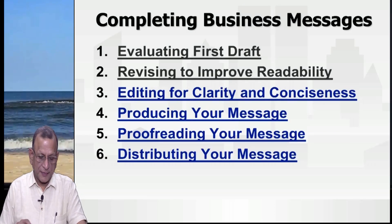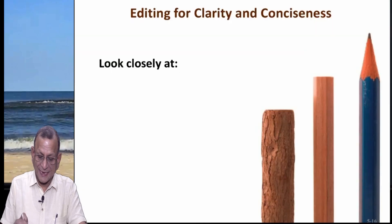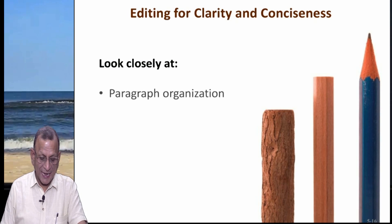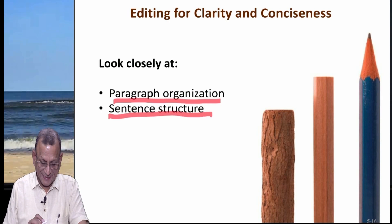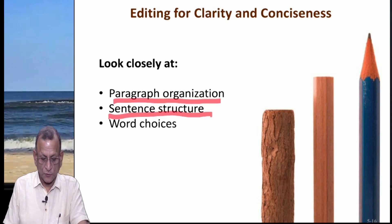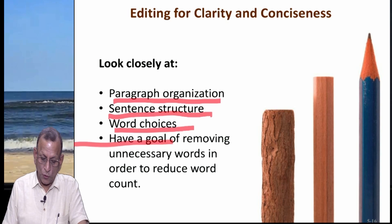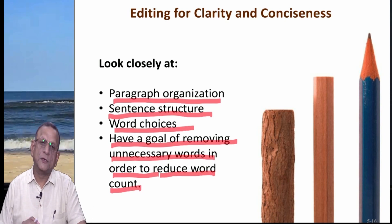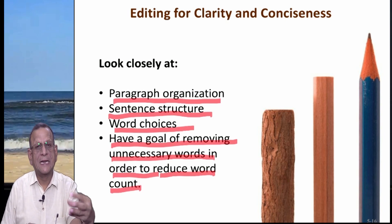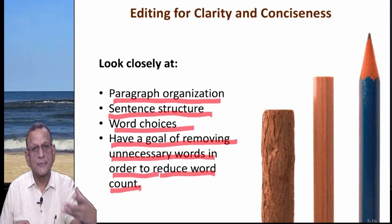The third section of chapter 6 is talking about editing for clarity and conciseness. What is clarity and conciseness? Look closely at paragraph organization, sentence structure, and word choices. Have a goal of removing unnecessary words in order to reduce word count. Every time we are talking about reduction — short sentences, short paragraphs, reduce unnecessary words.